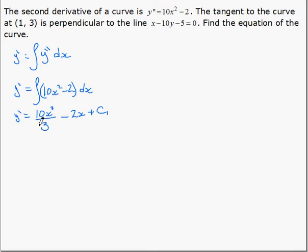Now, to find c1, we need to substitute in for x and for y prime. The point we're given in the question is x, y on the curve, so the x value is fine. However, the y prime value is not 3, that's the y value.